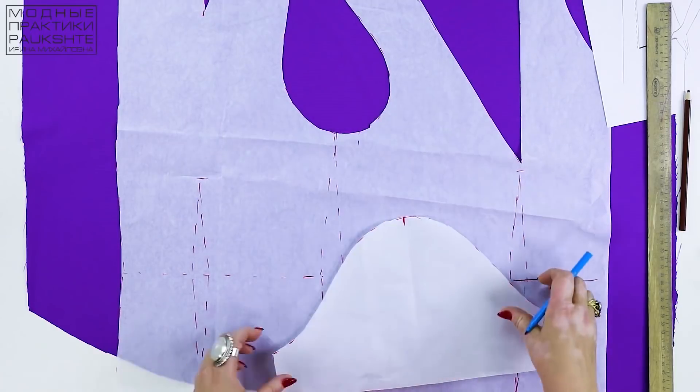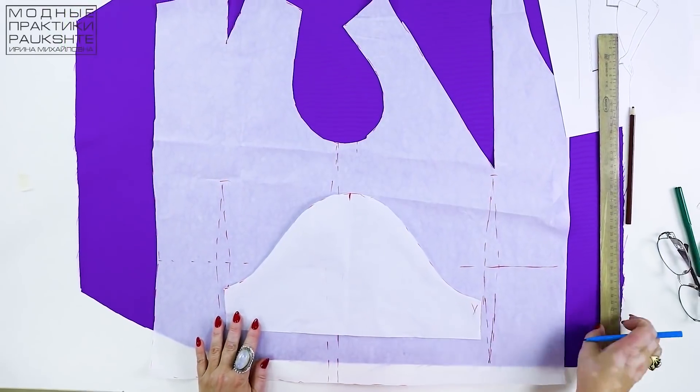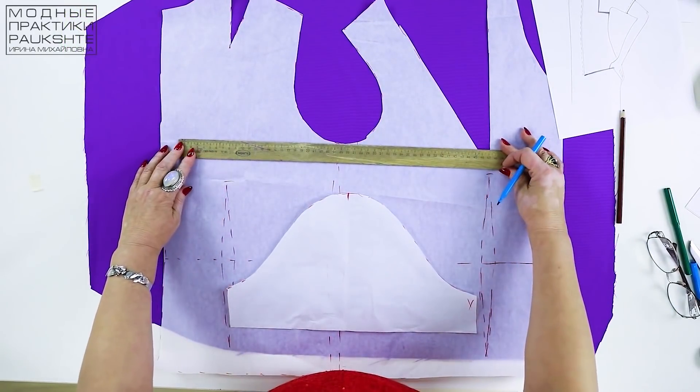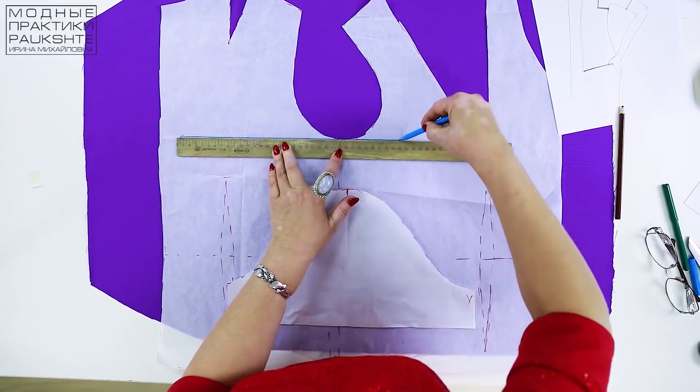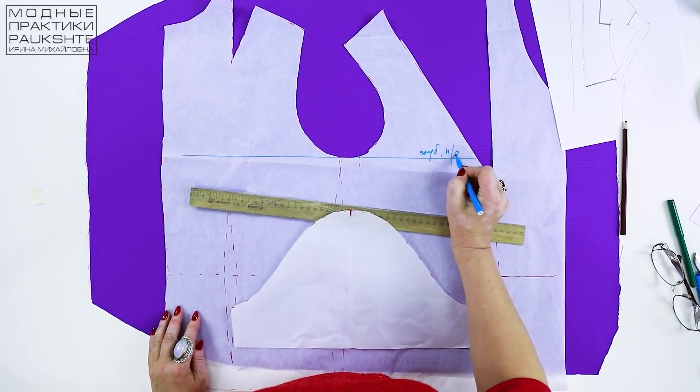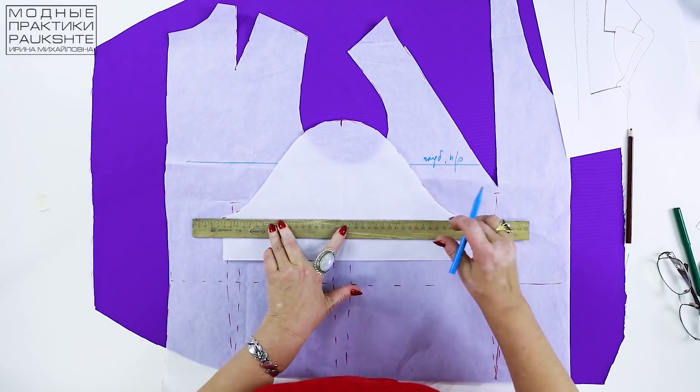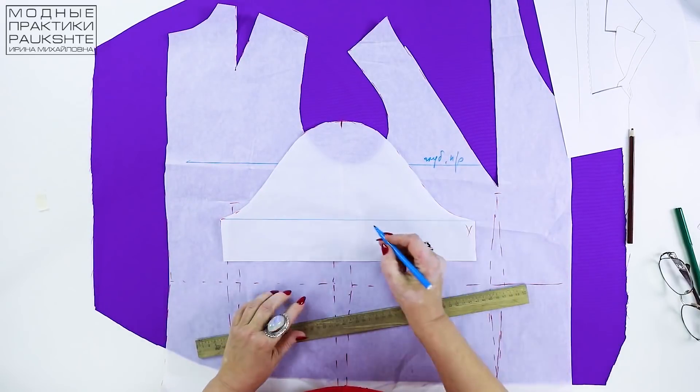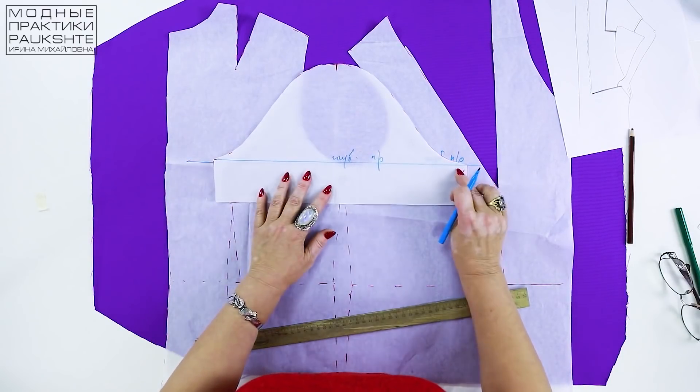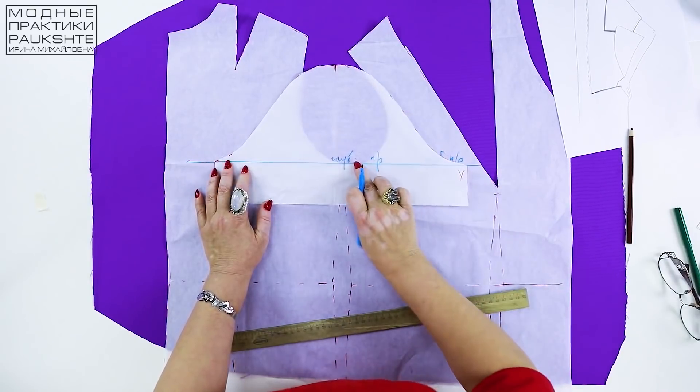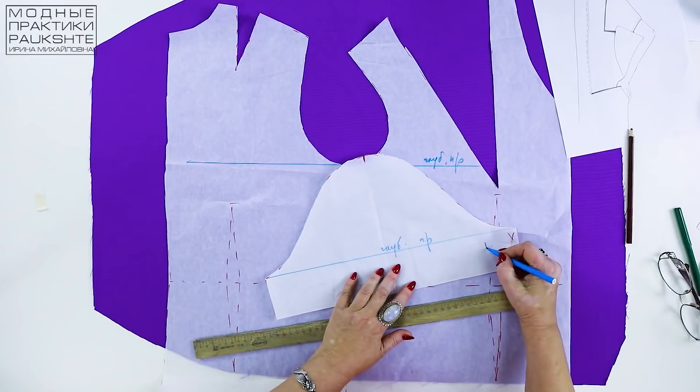To design such armhole we need patterns of a back, front and sleeve. What do we need to do first? I need to draw the armhole depth line. I'll sign it. I'll draw the same line here. You can see that the details match. I sign the front and the back parts and put the sleeve aside.